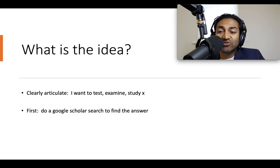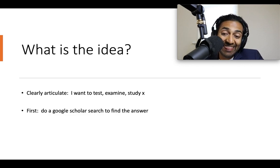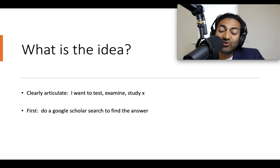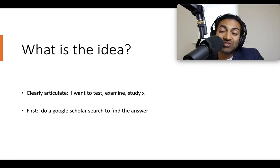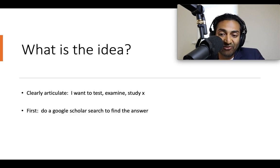Ask yourself: what do you seek to find, or what do you hope to prove? What do you wish you might see? And then, before you even start, do a Google Scholar search to see if that question has already been answered. You might be surprised — the things you think are very clever have already been answered many, many times over.